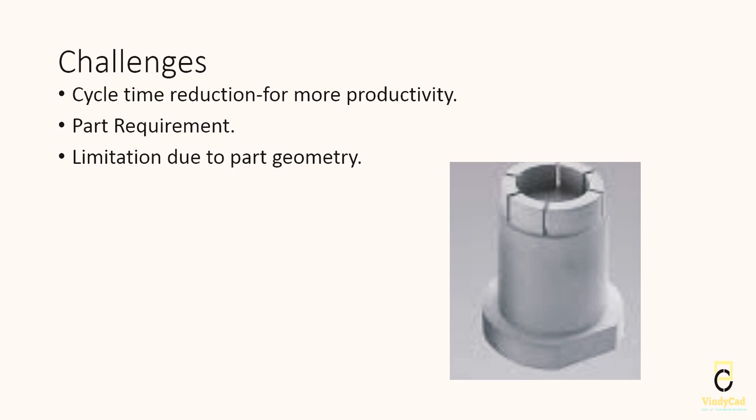Now it is time to discuss the challenges we are facing with our current cooling methods. In our current cooling method, we are trying our best to reduce cycle time to get more productivity. We are using beryllium copper and many more alloys, but even so, we have not achieved drastic changes in our cycle time. There are many machines on the market that can run in 3, 4, or 5 seconds, but we have not reached that kind of manufacturing to achieve such low cycle times.